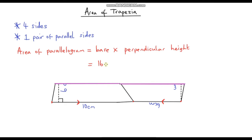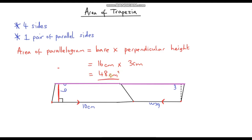Our base is 16 centimetres, and we're going to multiply that by our perpendicular height. Now, when I drew my original trapezium the height was 6 centimetres, and remember we cut this in half, so the height of our parallelogram is just half of 6, which is 3 centimetres. So 16 times 3 is 48, and that is in centimetres squared. The area of our parallelogram is 48 centimetres squared, which is exactly the same as the area of our trapezium.